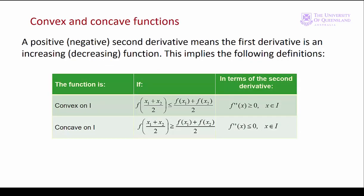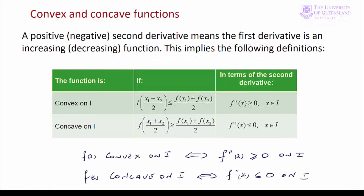In this slide we see the relationship between convexity, concavity, and the second derivatives. f of x is convex on some interval i if and only if the second derivative f double prime of x is greater than or equal to zero on i. Similarly, f of x is concave on i if and only if the second derivative is less than or equal to zero on i. We also have some formal definitions of convexity and concavity here.